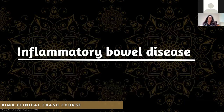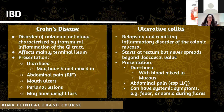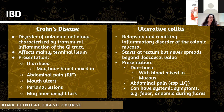Crohn's and ulcerative colitis can be grouped under inflammatory bowel disease. In SBAs and in real life, when you see someone with these symptoms, you'll often wonder which one it is, so they'll count as part of your differentials. Crohn's is characterized by transmural inflammation of the GI tract, meaning every single layer is affected, whereas ulcerative colitis affects just the mucosa and the submucosa.